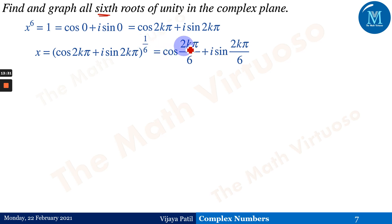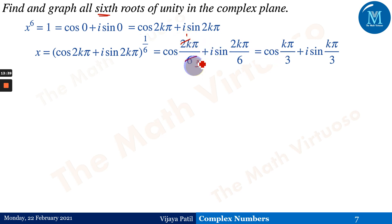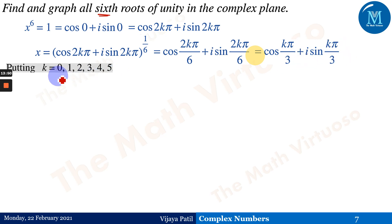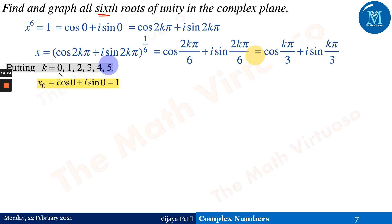Simplifying 2kπ/6 = kπ/3, we get x = cos(kπ/3) + i sin(kπ/3). Putting k = 0, 1, 2, 3, 4, 5, we get six roots. For k = 0: x₀ = cos 0 + i sin 0 = 1.